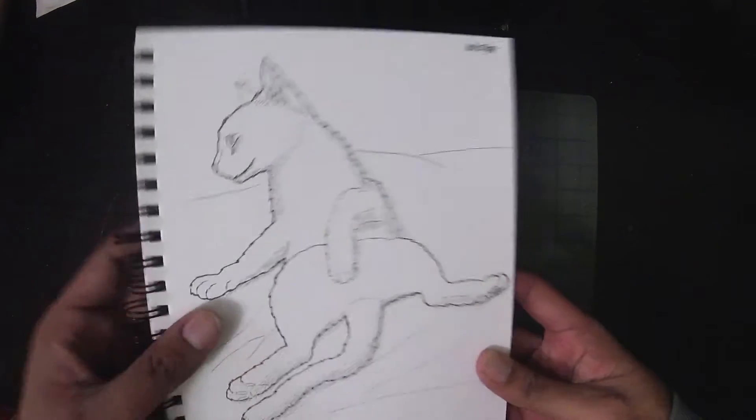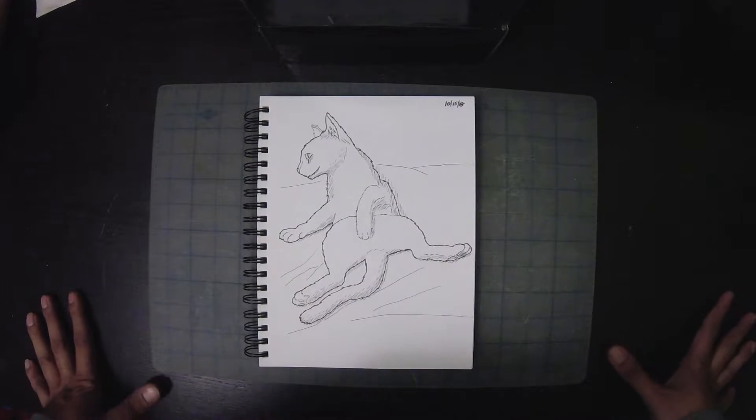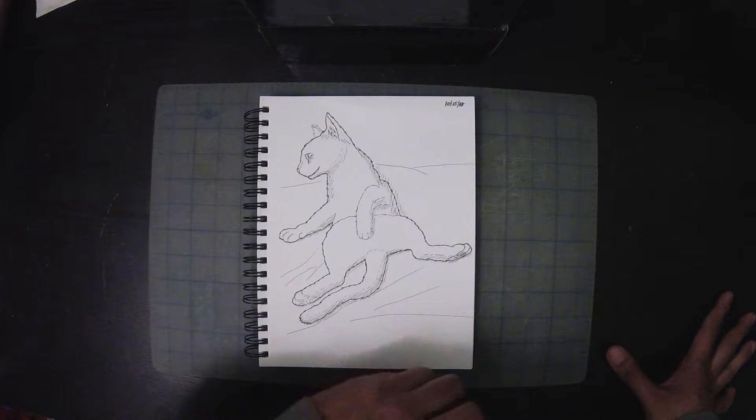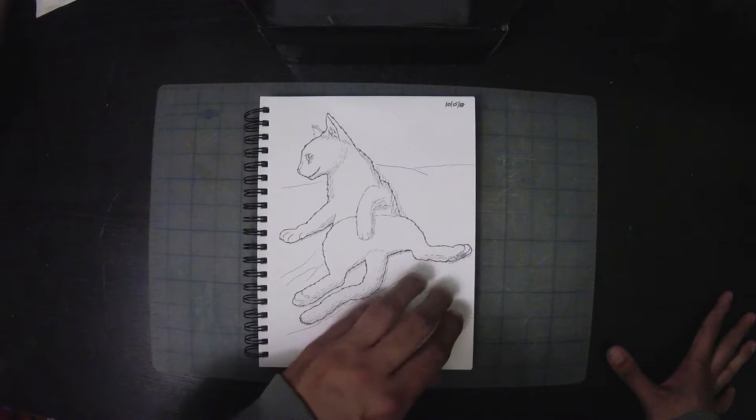This is one of my cats, Rhodey actually, named after War Machine from the Marvel movies. He was just laying on the couch watching TV with me actually. So I did a quick sketch of him. Again, all done in ink.